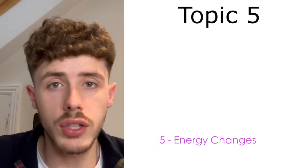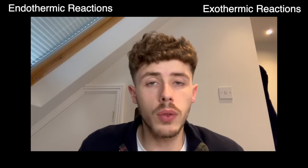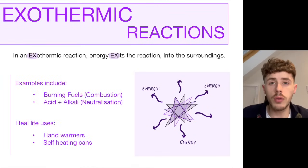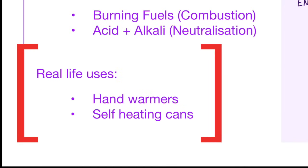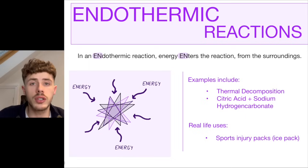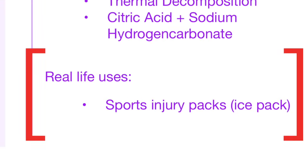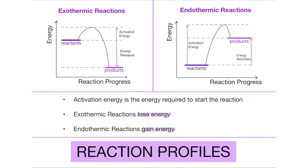Topic 5 is energy changes. Within topic 5, we have exothermic and endothermic reactions. An exothermic reaction is where energy exits the reaction and goes to the surroundings. An endothermic reaction is where energy enters the reaction. The best way to show endo- and exothermic reactions is with a reaction profile. Reaction profiles are shown on a graph where you have the energy level of the reactants and the energy level of the products. A key detail on these graphs is the activation energy — the required energy to make the reaction start in the first place.